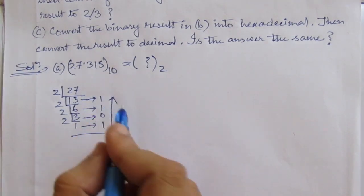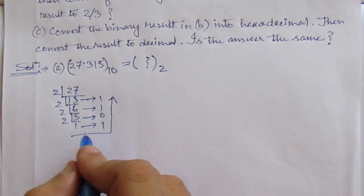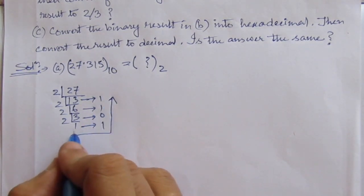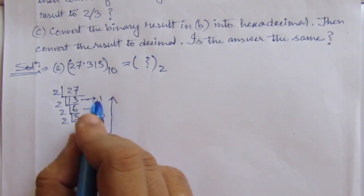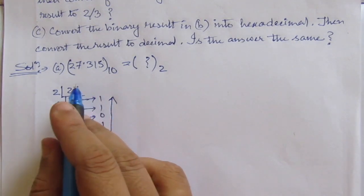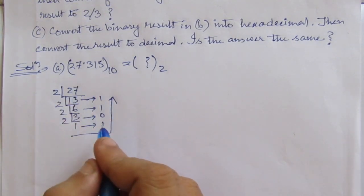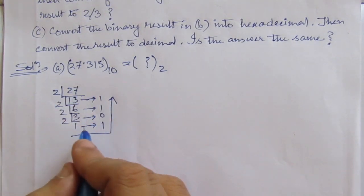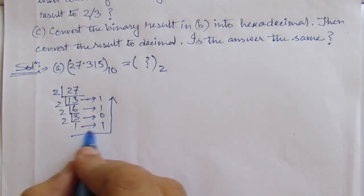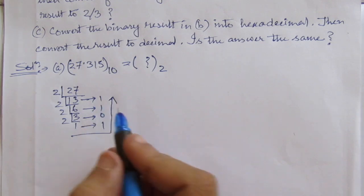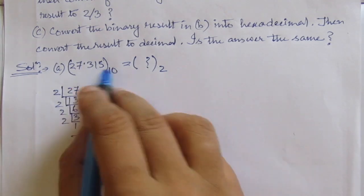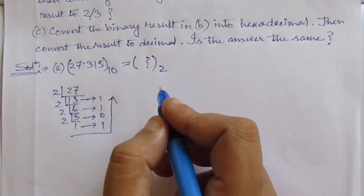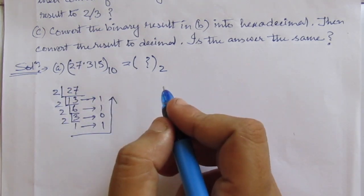In this way we write down the remainders, giving us 11101. So 27 in binary is 11101. Now let us do the decimal part — converting the digits after the decimal point.